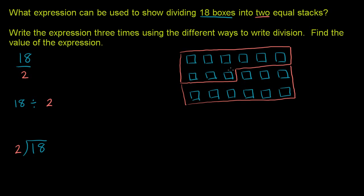And these are equal groups. How many do we have in each group? Well in the top one we have 1, 2, 3, 4, 5, 6, 7, 8, 9.